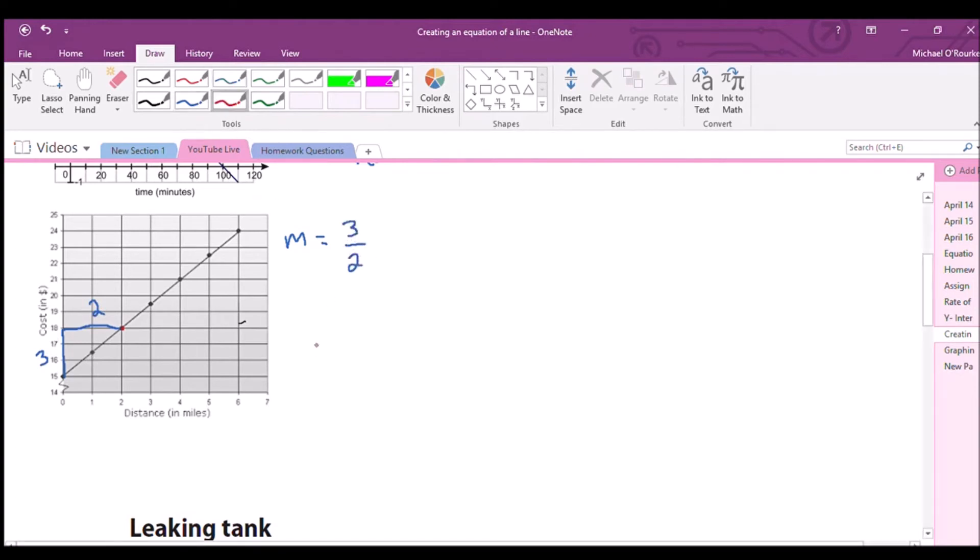Now, if we find our B value, our B value here equals 15. Then we go back over this way and we go Y equals blank X plus blank. And we will fill in our numbers. It's going to go here is three over two. And what's going to go over here is 15. And that's it. We have our equation here.